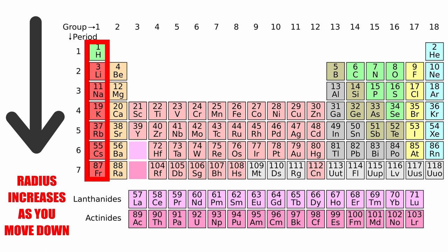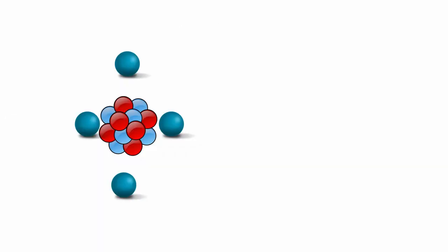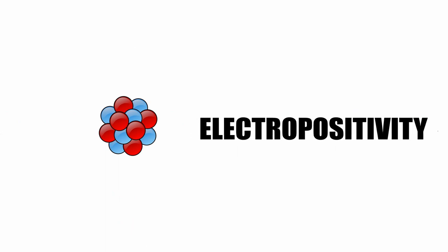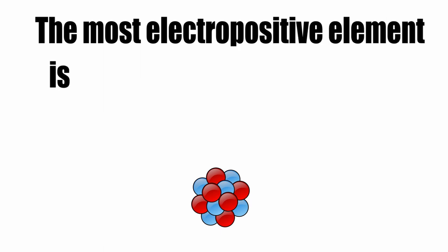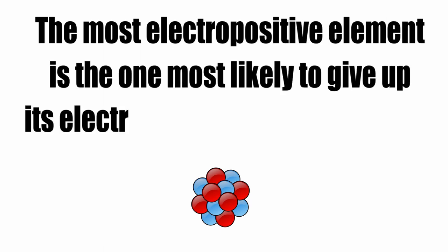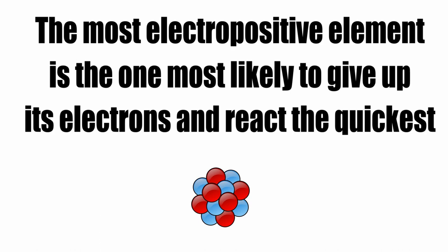Another trend is the larger radius of elements as you move down a column. The number of valence electrons remains the same, even though the atomic number keeps increasing. The measure of an element's ability to lose electrons is known as electropositivity, and it increases as we move down a column. Again, the most electropositive element is the one most likely to give up its electrons and react the quickest.